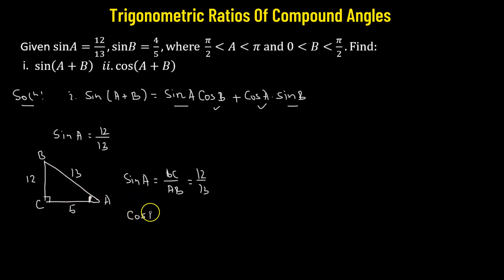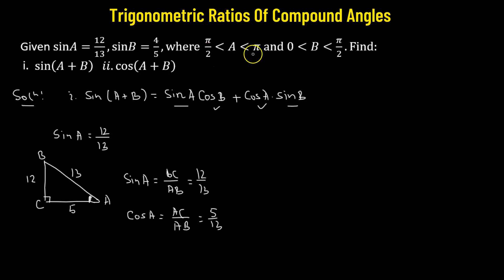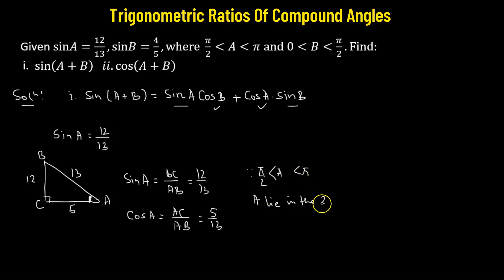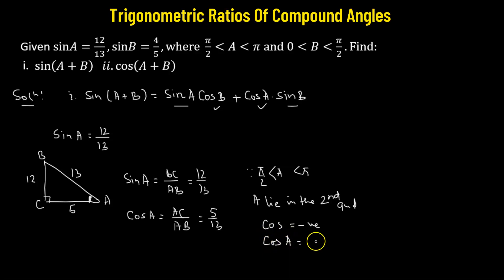Now that we have all the sides, we can find the value of cosine of angle a. Cosine of angle a is defined as the ratio of the base to the hypotenuse, giving 5 over 13. However, it's given that angle a lies between pi over 2 and pi radians, meaning angle a lies in the second quadrant. In the second quadrant, cosine is negative because only sine and its reciprocal cosecant are positive. So cosine of angle a equals negative 5 over 13.